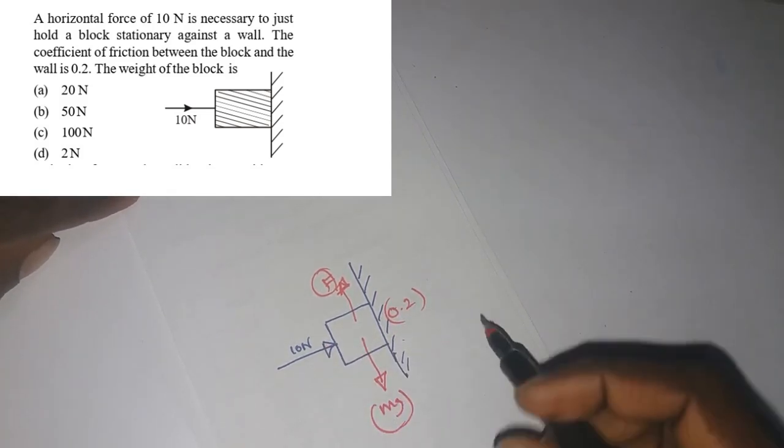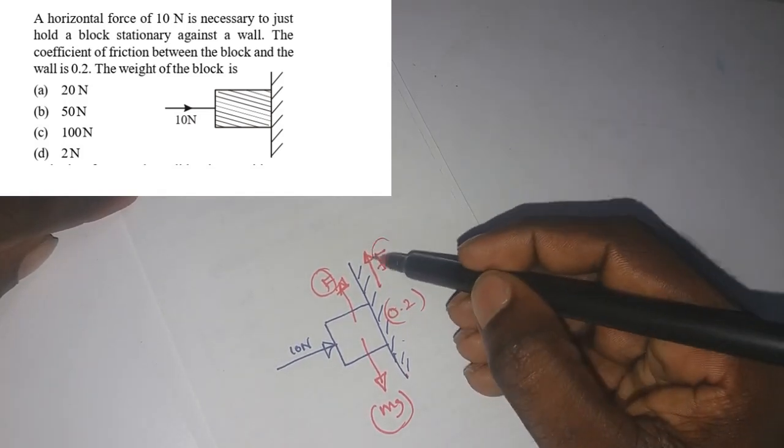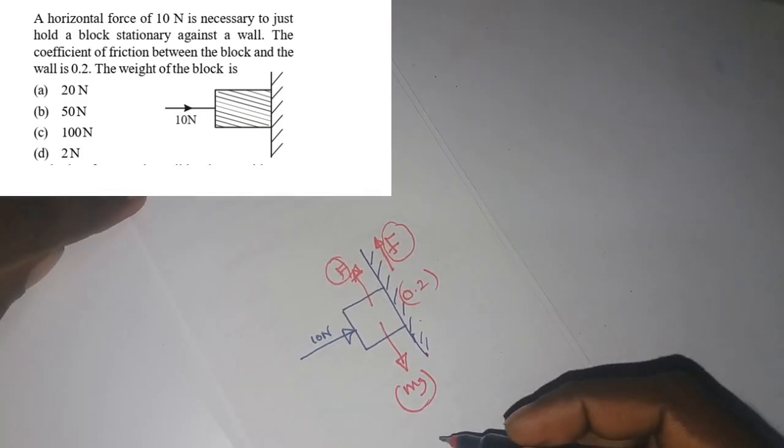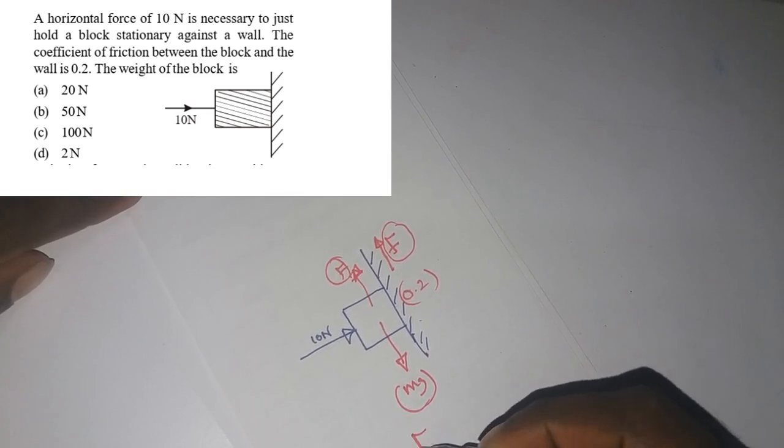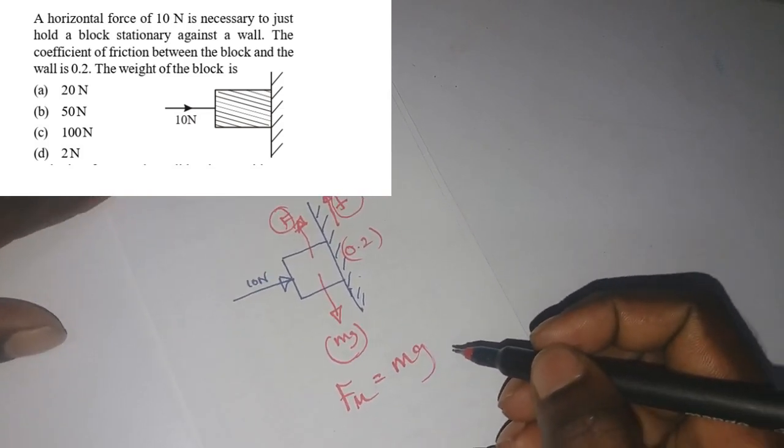So frictional force will act upwards. We need to find this frictional force. For frictional force, it will act upwards, so if frictional force F_max should be upwards, it should be equal to mg, the weight of the block.